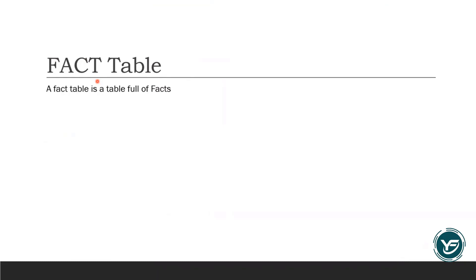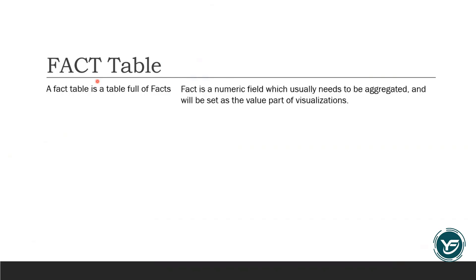When we talk about the fact table, what does that mean? A fact table is basically a table full of facts. So naturally the question that comes into our mind is: what is a fact? A fact is basically a numerical field — it will always be a numeric field which usually needs to be aggregated, and will be set as the value part of the visualization, which we will later see in our Power BI display.